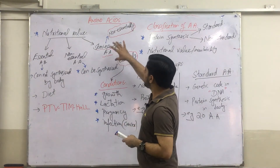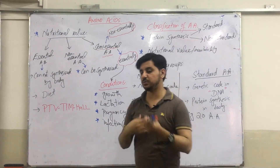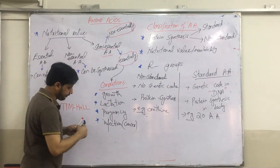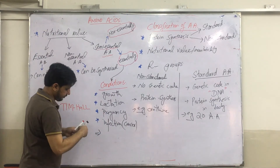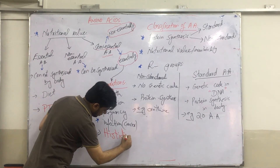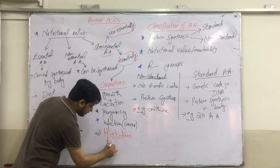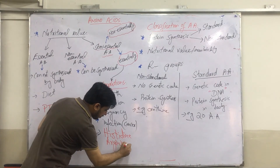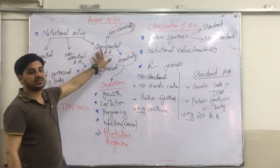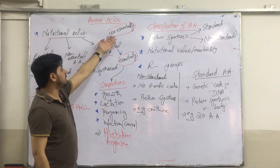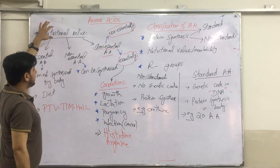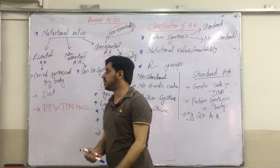The amino acids which are placed in the semi-essential category are histidine and arginine. These two amino acids behave as semi-essential amino acids, meaning they can behave as non-essential as well as essential amino acids depending on conditions. This was about the classification of amino acids on the basis of their nutritional value.